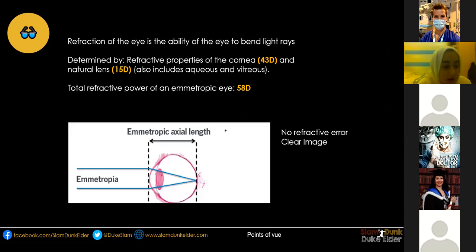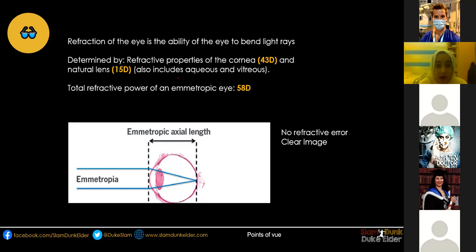Moving on to refraction of the eye: refraction is the ability of the eye to bend light rays, determined by the refractive properties of the cornea — power 43 diopters — and the natural lens at 15 diopters. Light is also slightly refracted by the aqueous and vitreous. Total refractive power is simply an addition equation: for a normal eye it's 58 diopters. With emmetropia, light rays are focused appropriately on the retina at one point, giving a completely clear image with no refractive error.